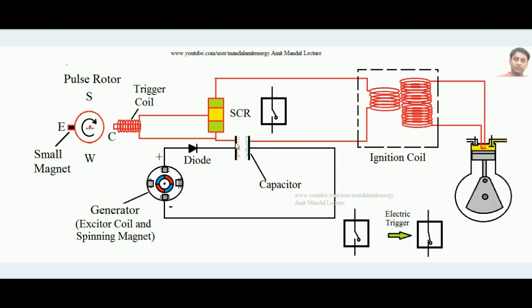The top circuit is the discharging circuit. One plate of the capacitor is connected to an SCR switch, and the other plate is connected to the ignition coil. The ignition coil consists of two coils — primary and secondary — making it a step-up transformer. If the number of turns in the secondary coil is more than in the primary coil, it increases the voltage. The SCR, or Silicon Controlled Rectifier switch, is by default in open circuit state, but when electrically triggered it becomes a closed circuit.